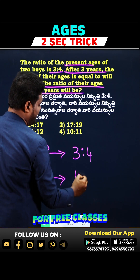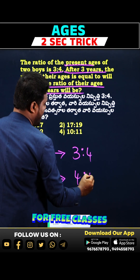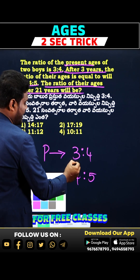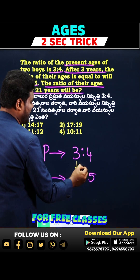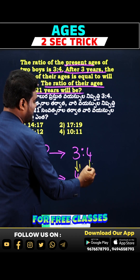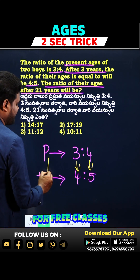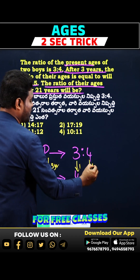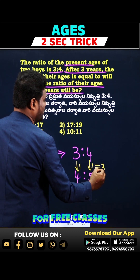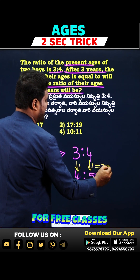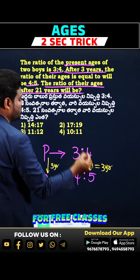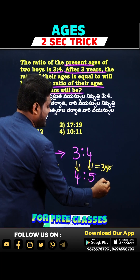Now observe carefully — the difference between the ratios is 1 part. The difference in years is 3 years. So I can conclude: one part equals three years. The question is asking about after 21 years.